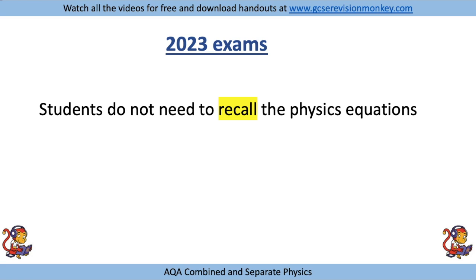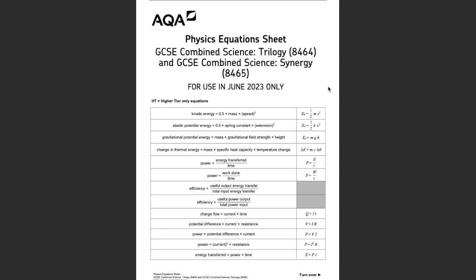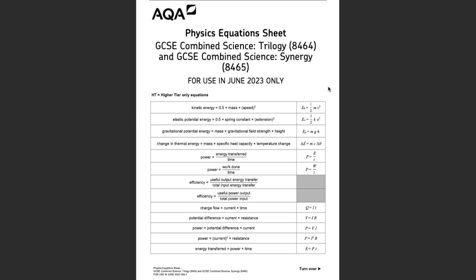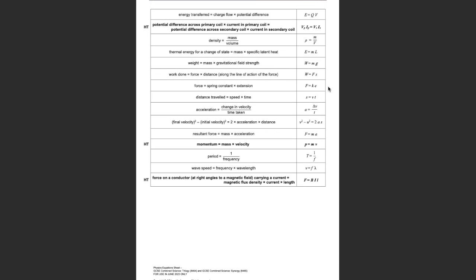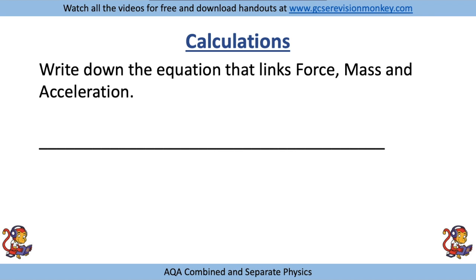For the 2023 exams, you do not need to recall the physics equations. This is what the equation sheet will look like — it will have all of the equations on there for you. You will need to use the physics data sheet to write down certain equations. For example, if a question says 'write down the equation that links force, mass and acceleration', you'd look for those words on the data sheet and write down the correct equation.